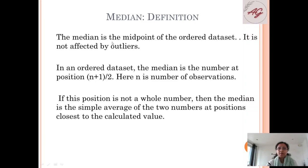Now let us understand median definition. What is median? The median is the midpoint of the ordered data set, so it is not affected by the outliers. In an ordered data set, the median is the number at position (N+1)/2, where N is the number of observations.